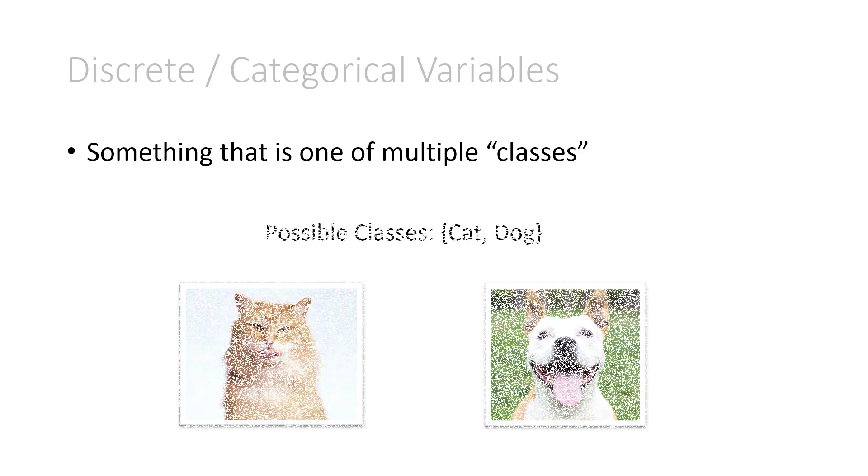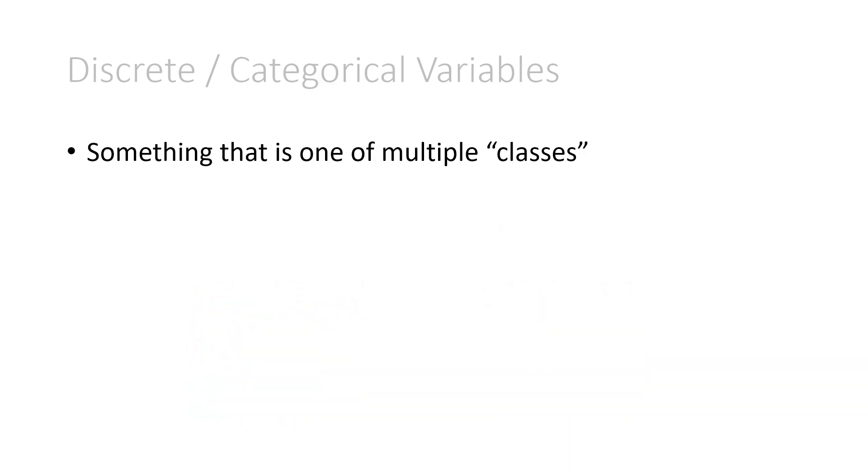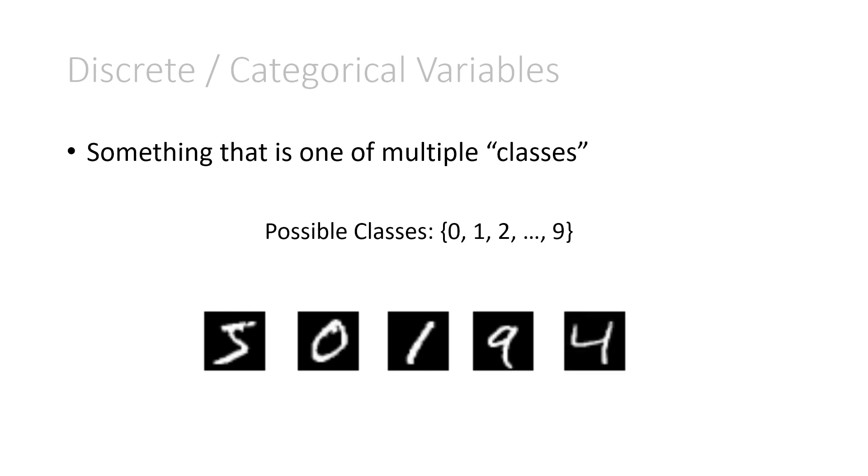Another example could have more than two classes. Maybe the possible classes are 0, 1, 2, up to 9. Instances of this categorical variable would be images that have a handwritten digit representing 0, 1, 2, up to 9. And this one happens to be a 5. This one's a 0, a 1, a 9, and a 4.